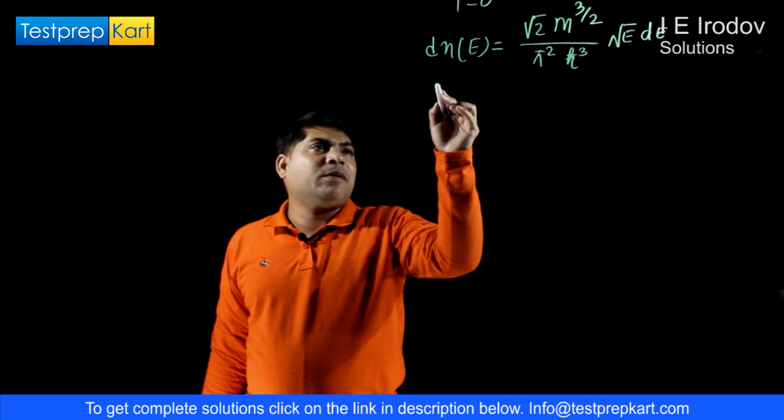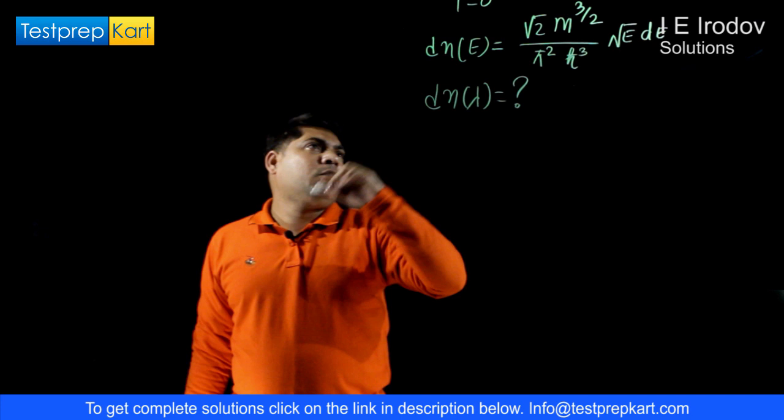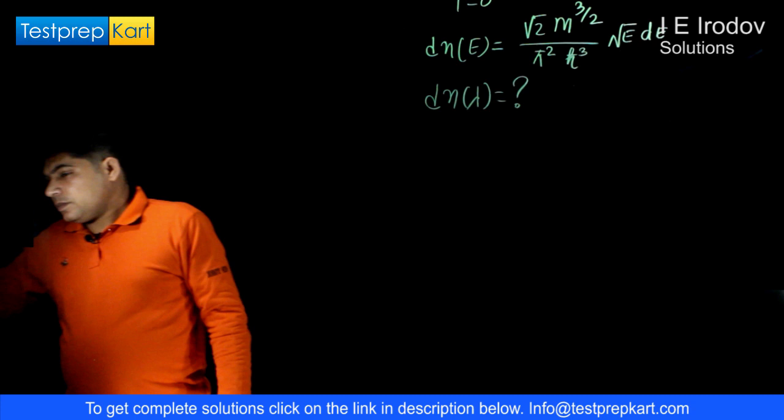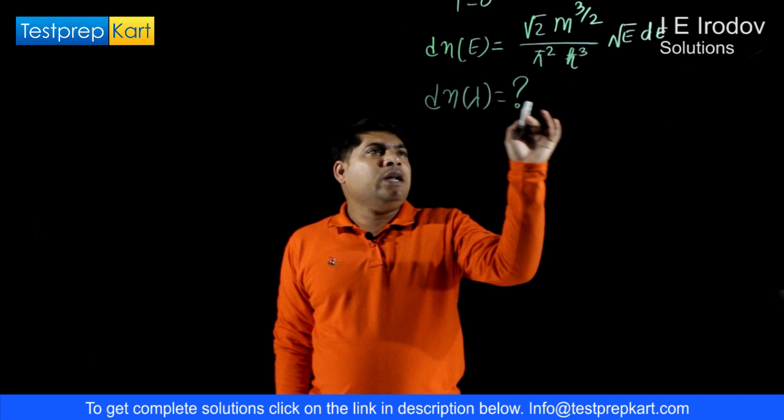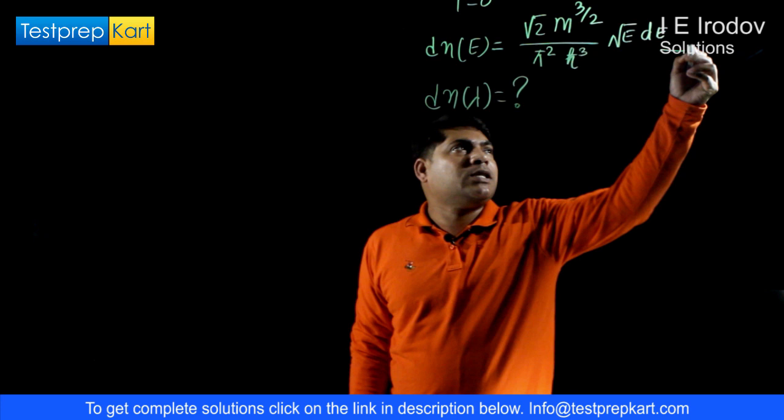With the help of this equation, we have to find out the number of free electrons as a function of de Broglie wavelength — that is, we need to find dN(λ) from this equation where dN(E) is given. The distribution of electrons in the vicinity of absolute zero is given in terms of energy.